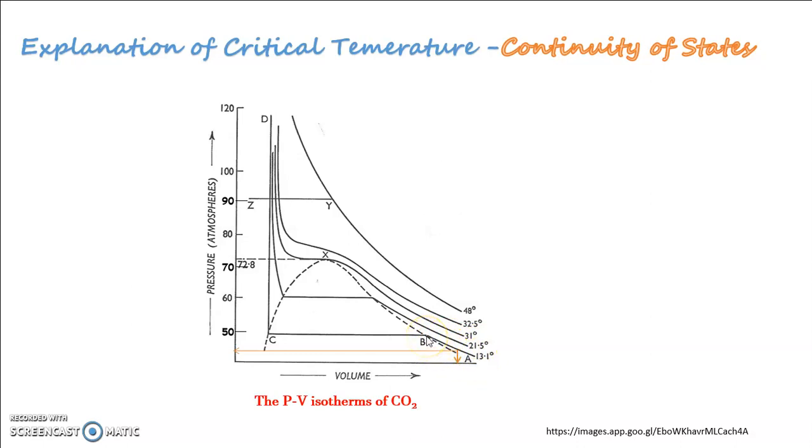At B, which represents a pressure less than 49.8, liquefaction of gas commences and thereafter a rapid decrease in volume. You can see a rapid decrease in volume at constant pressure, at the same pressure, 49.8 itself. There is a rapid decrease in volume as more and more gas molecules converted into the liquid state. At C, the gas becomes completely liquefied.